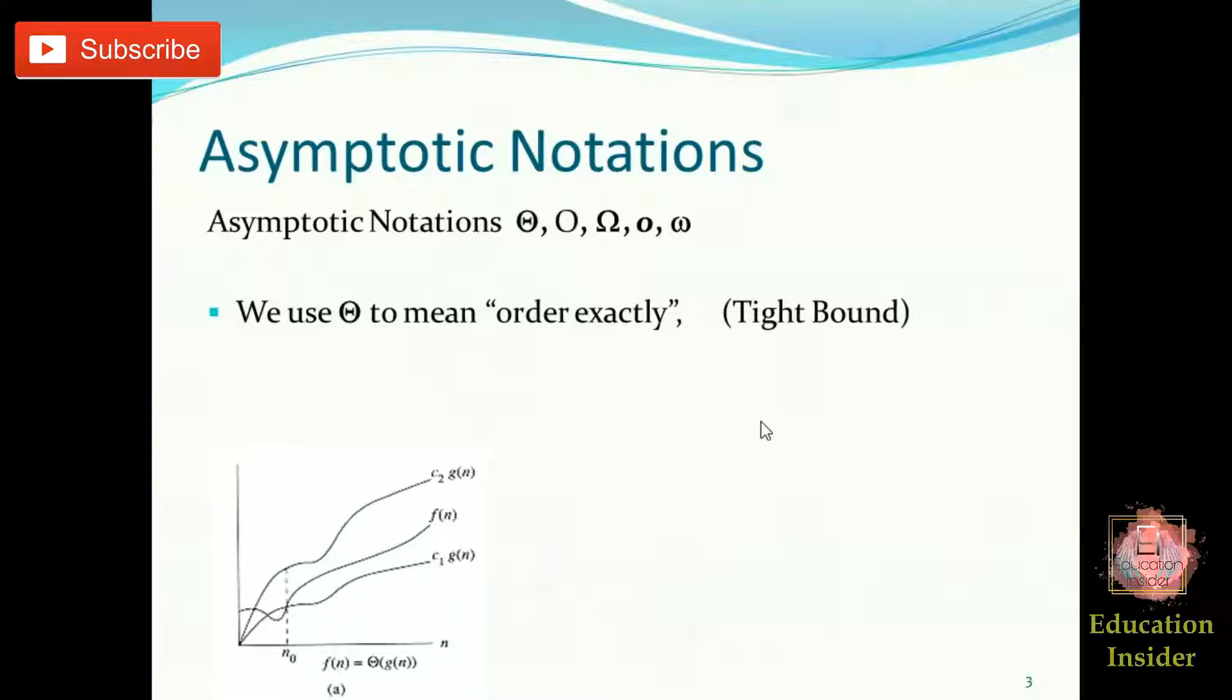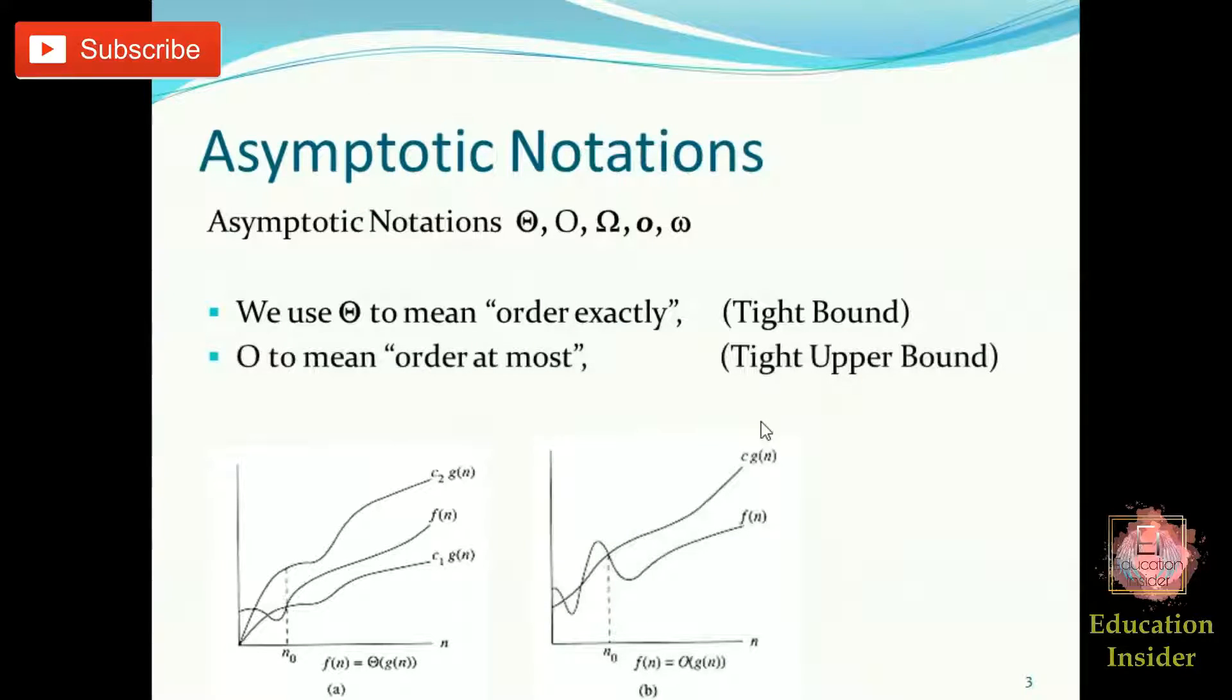The Big O notation simply defines an upper bound of an algorithm. It bounds a function only from above, and we can say this notation is a tight upper bound.